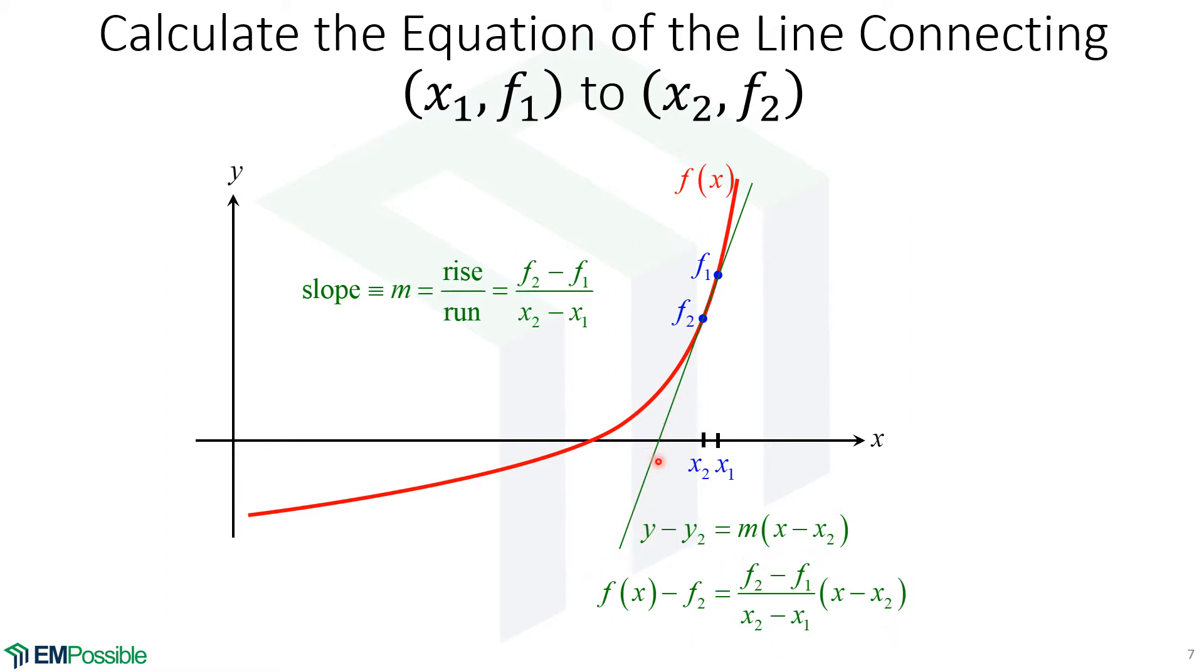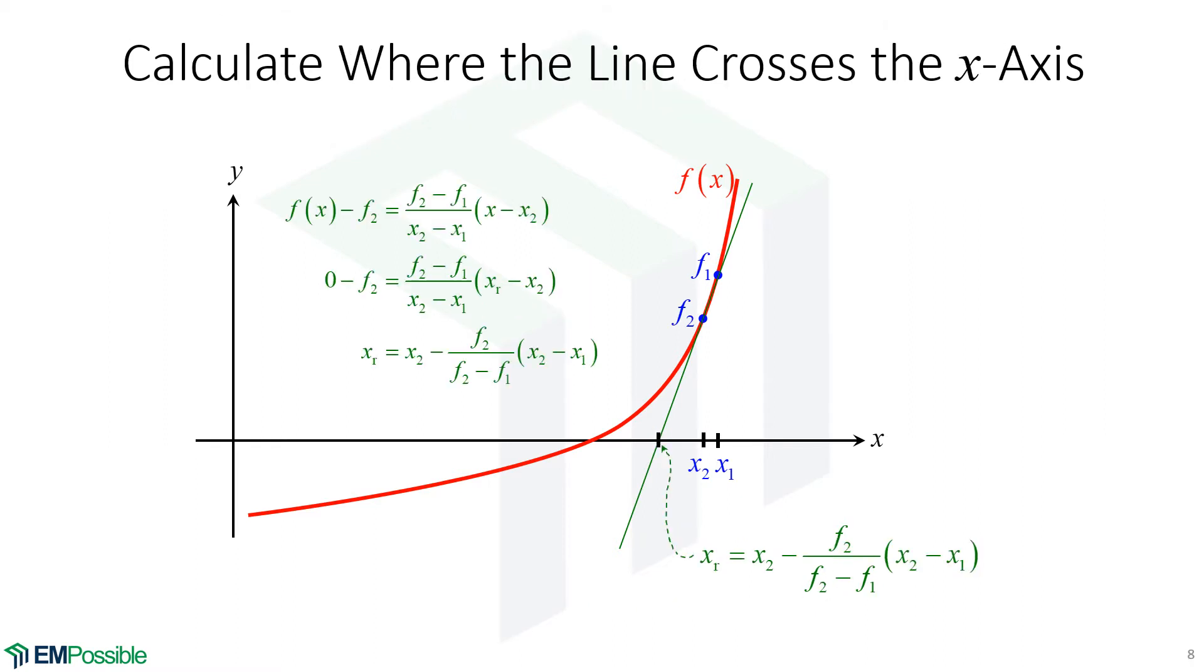And next, we need to figure out where that crosses the x-axis. So this is the equation we have from the previous slide. To figure out where that crosses the x-axis, we will set our function equal to zero. And we will solve for this x sub r.